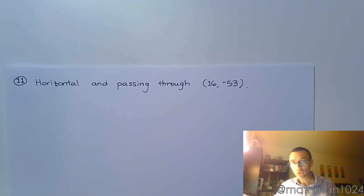All right, we have a couple of fairly quick questions here. This first one says you want to be horizontal and passing through the ordered pair 16, negative 53.